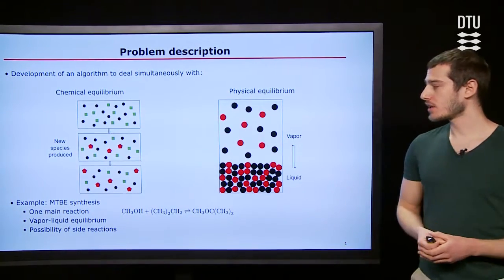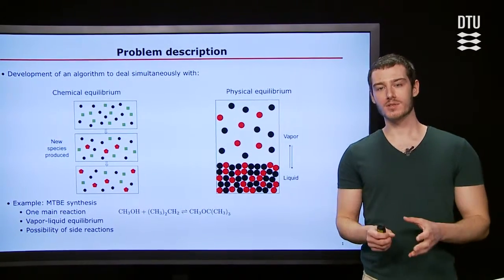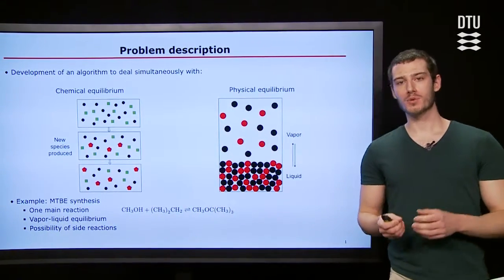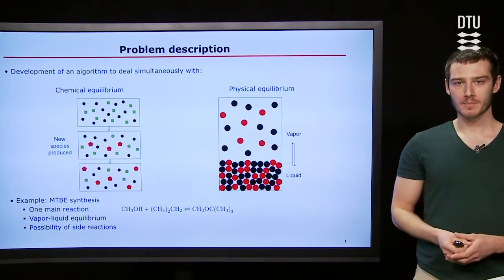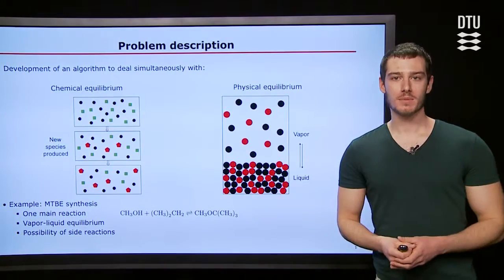An example in the industry is the MTBE synthesis where we have one main synthesis reaction and the components distribute between a vapor and a liquid phase. Of course, if we consider the possibility of side reactions, the system becomes much more complex.